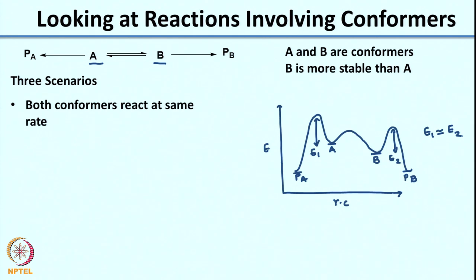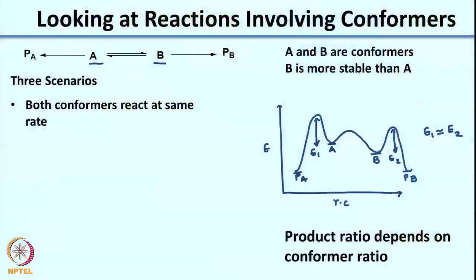If both conformers are reacting at the same rates, what decides which is the major product? In this case, the major product ratio would depend mainly on the conformer ratio. So if B is more stable than A, that would indicate that the major product would be PB as compared to PA, because the reaction rates for both are the same. This is the first scenario, assuming the reaction is going under kinetic control.